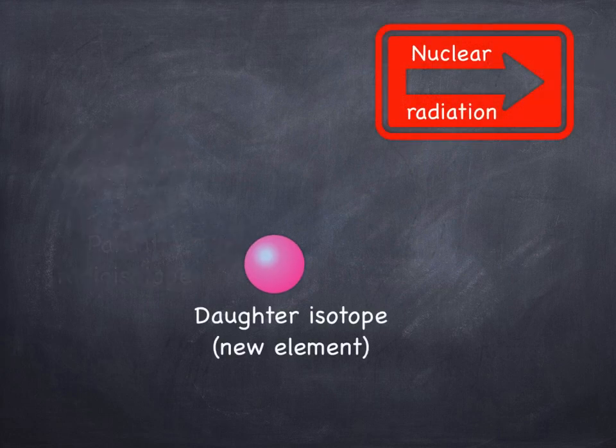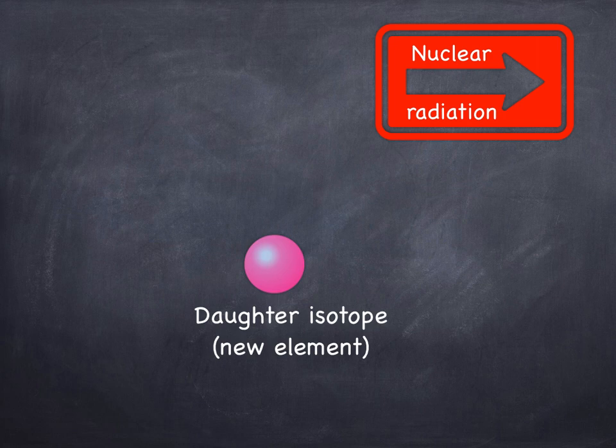When it's decayed we produce something called the daughter isotope, and that's a new element. It's a different element from what we started with. We've also given out nuclear radiation. This process is called radioactive decay.